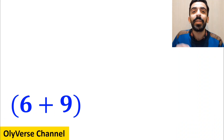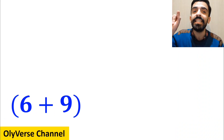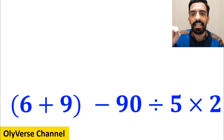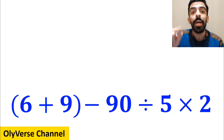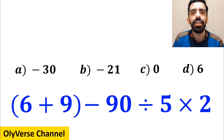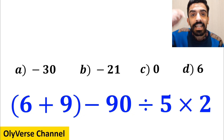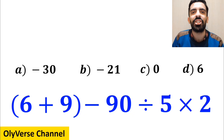What is the value of the expression 6 plus 9, in parenthesis, then minus 90, divided by 5, multiplied by 2? Which option do you think is the correct answer to this question?